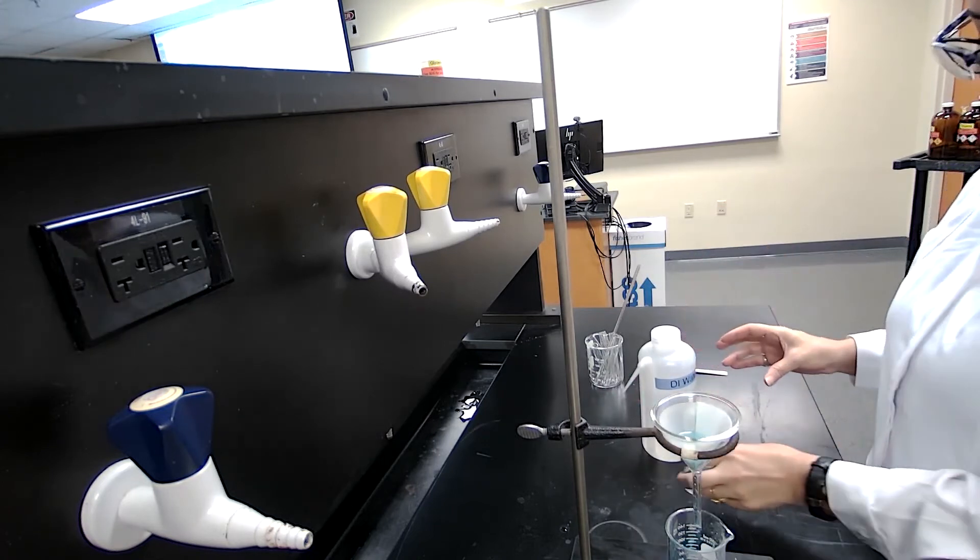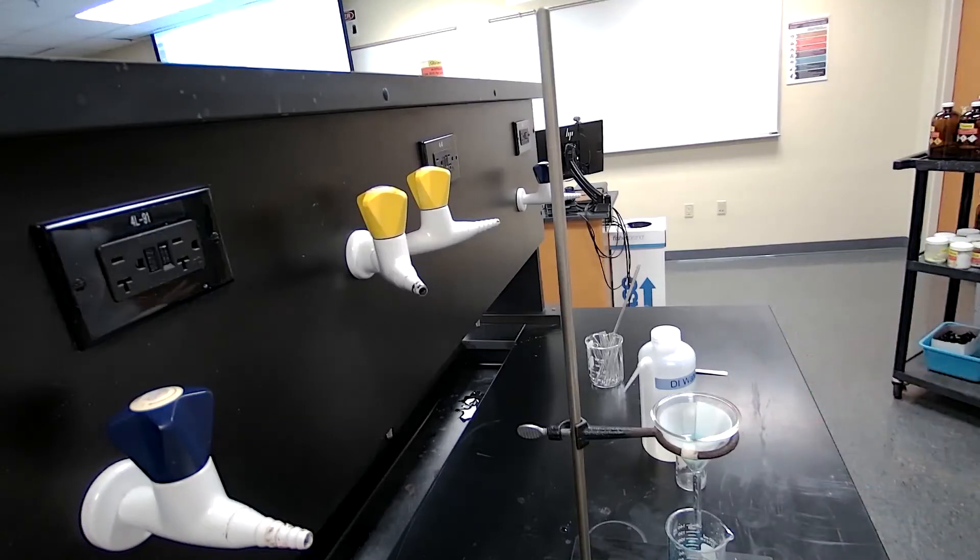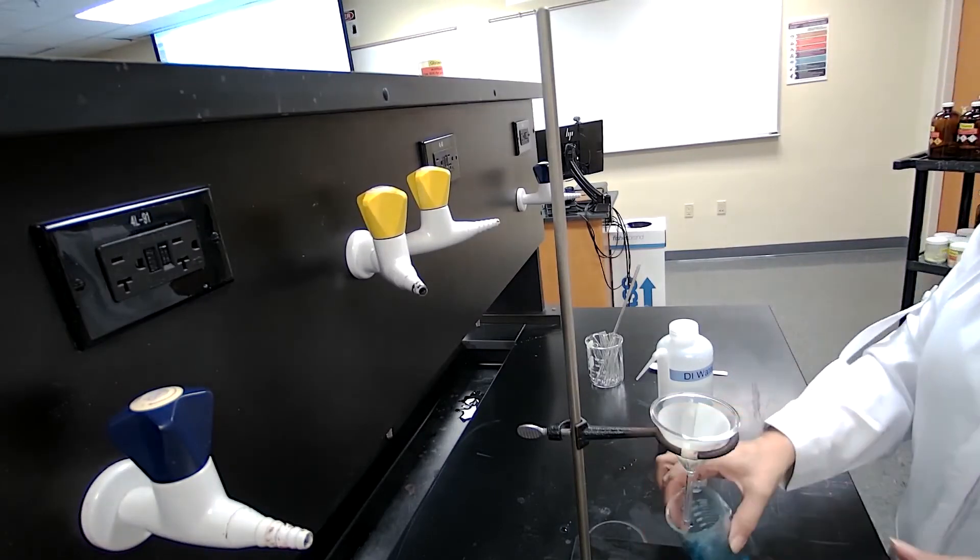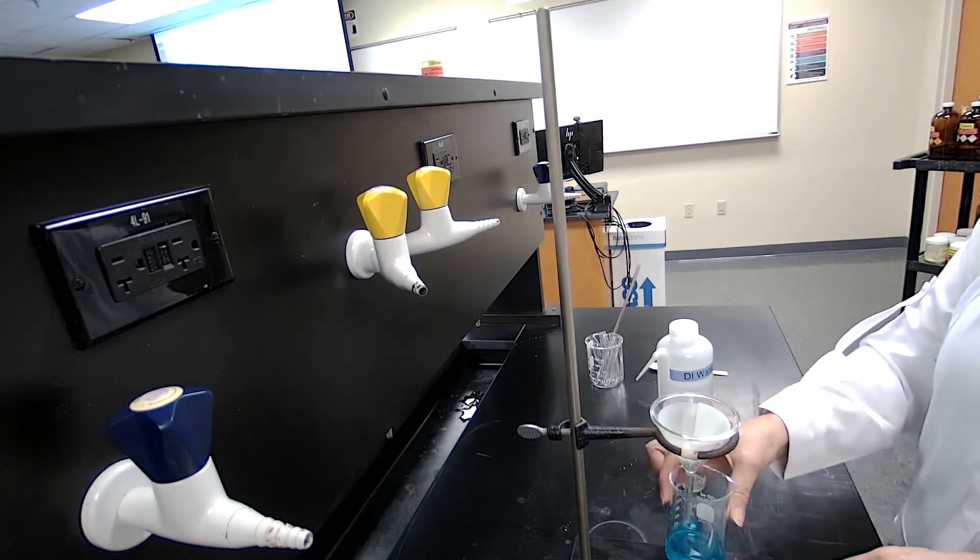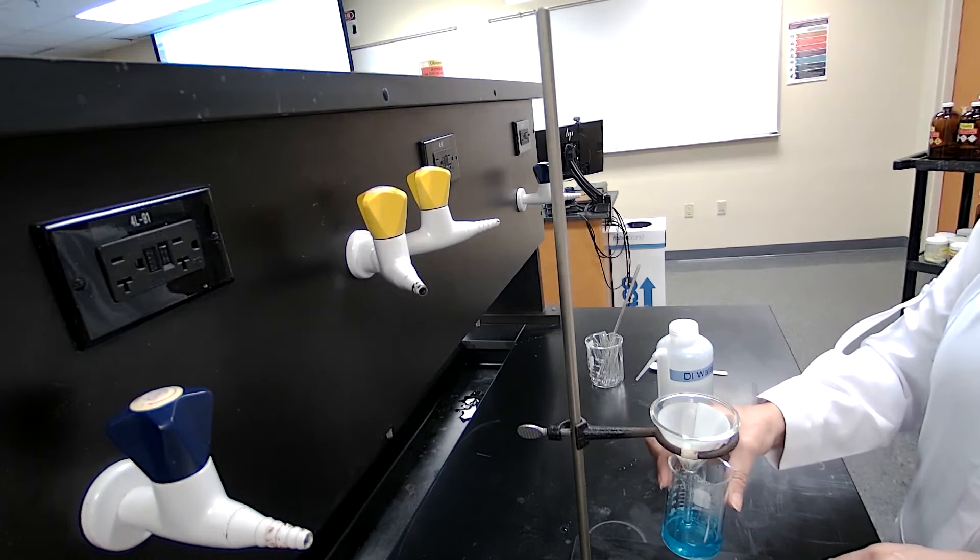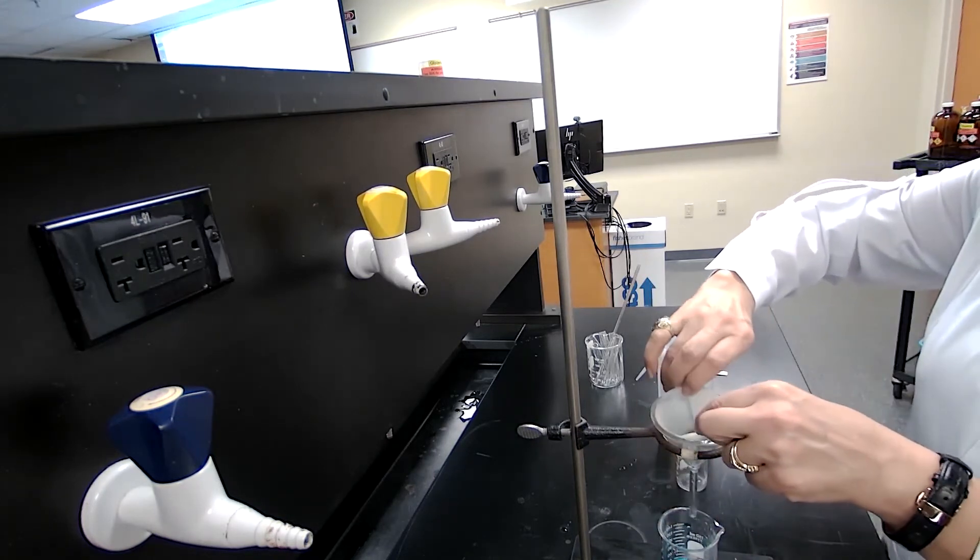Now, with this, we have separated the solid from the liquid. The liquid portion is now in the beaker. We have a solution of copper sulfate - it's a blue color solution in the beaker. And the sand is on the filter paper.